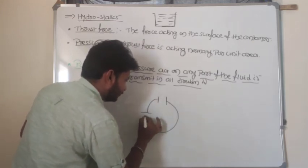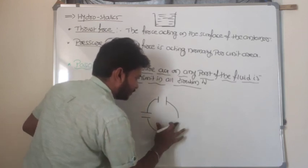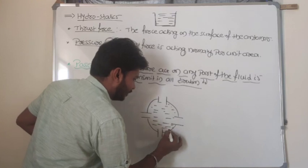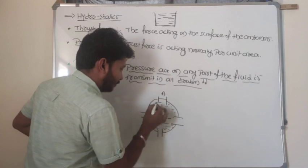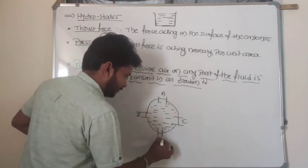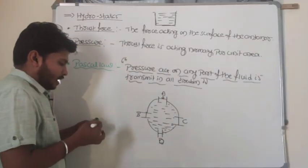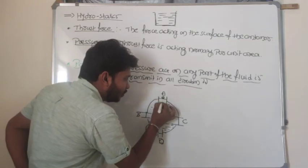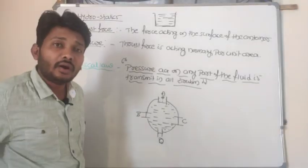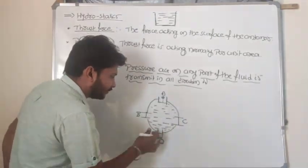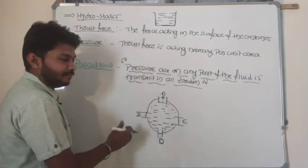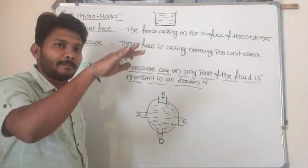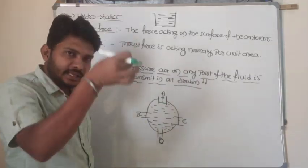I will place pistons at different points on the spherical object filled with fluid — point A, point B, point C, and point D. Now I will apply pressure at piston A, making it move downward. As piston A moves down, pistons B, C, and D also move away from each other. So applying pressure in a single direction at point A causes the other pistons to move.